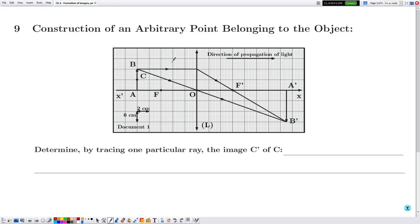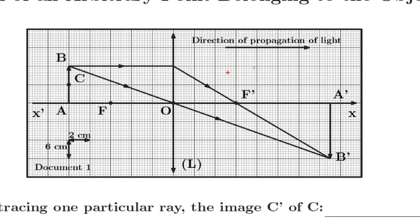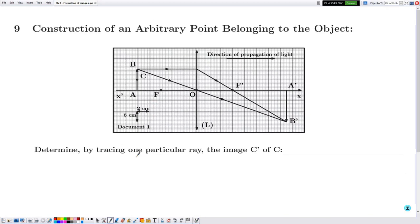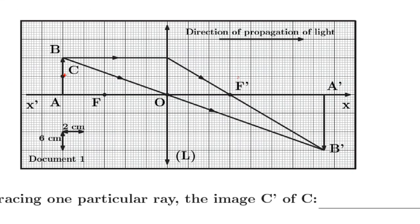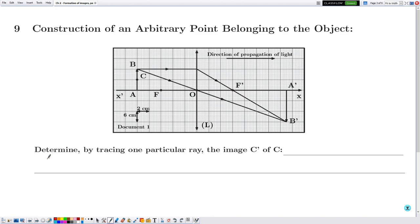In Section 9, they are asking us to construct an arbitrary point belonging to the object. Specifically, determine by tracing one particular ray the image C' of C. We have lens L and the image A'B' given by L due to object AB. The point C belongs to object AB and we need to determine its image C'. The word 'determine' means we need to trace and justify. Moreover, since they say 'by tracing one particular ray,' we use one ray to determine the image.